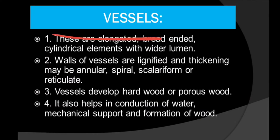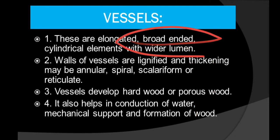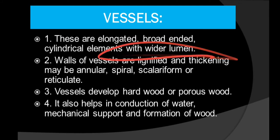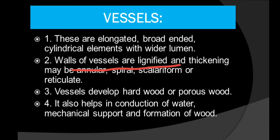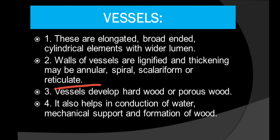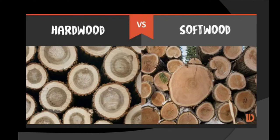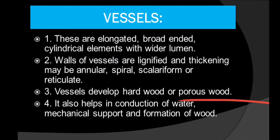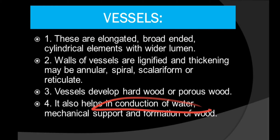Xylem vessels are elongated, broad-ended cylindrical elements with a wider lumen, unlike tracheids which have a narrow lumen and tapering ends. The walls of the vessels are lignified, and thickening may be annular, spiral, scalariform, or reticulate. Vessels develop hardwood, also called porous wood, whereas softwood or non-porous wood is made by tracheids. Vessels also help in the conduction of water, give mechanical support, and help in the formation of wood.